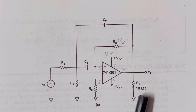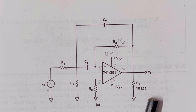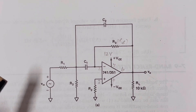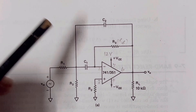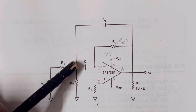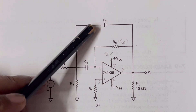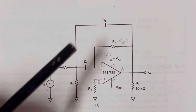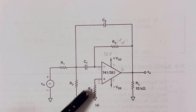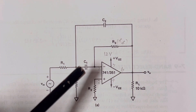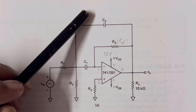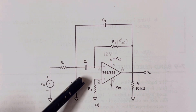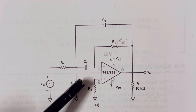The load resistance used here is 10 kΩ. When we design the circuit, C1 is made equal to C2. Hence, do not confuse with the positions of C1 and C2 — it does not make any difference.